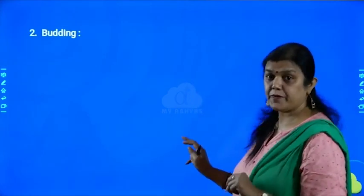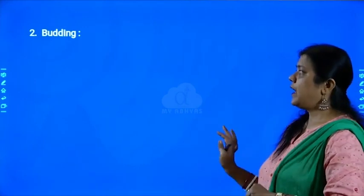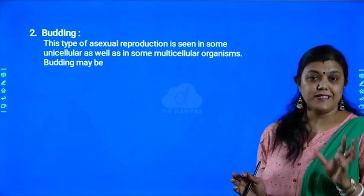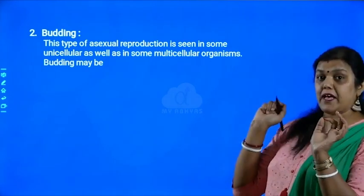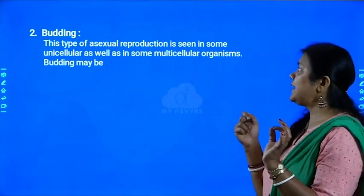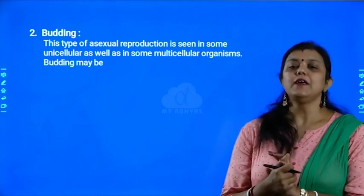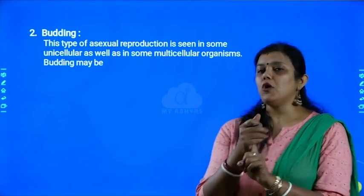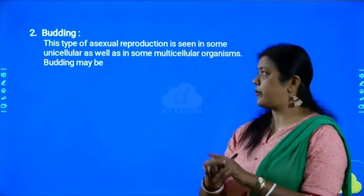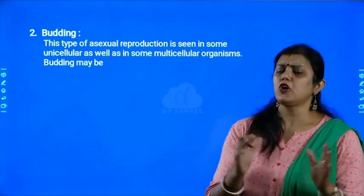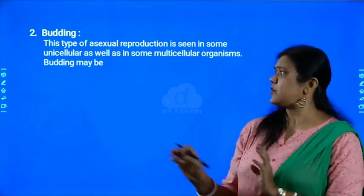We finished with fission. Now the next mode of asexual reproduction is budding. The word budding itself contains the term bud. This type of asexual reproduction is seen in some unicellular organisms — uni means single — so some single-celled organisms show this mode of reproduction called budding, not all of them. Some multicellular organisms also show this type of reproduction.